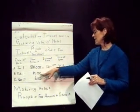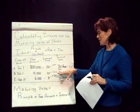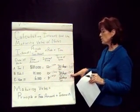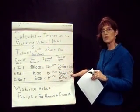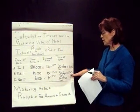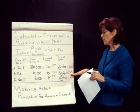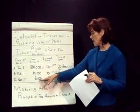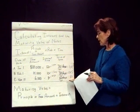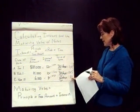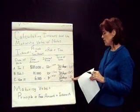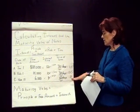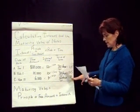The next note is a $15,000 note with $125 in interest, so the maturity value is $15,125. And the last note is $6,000 with interest of $80, so the maturity value would be $6,080.